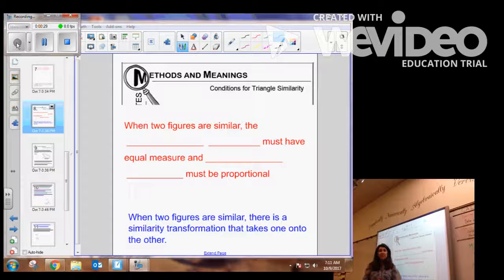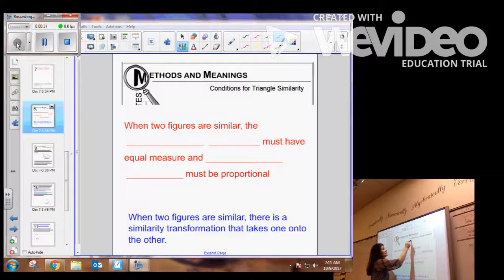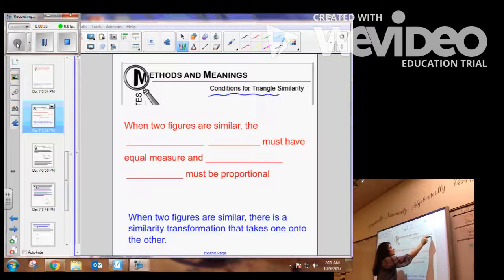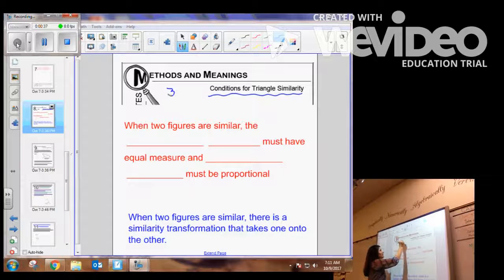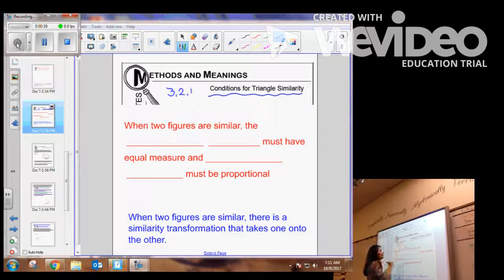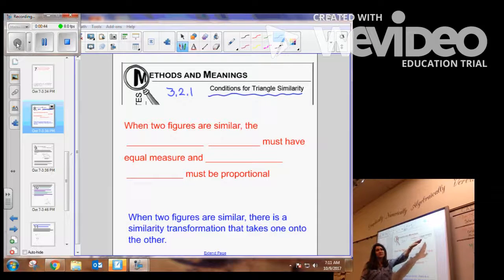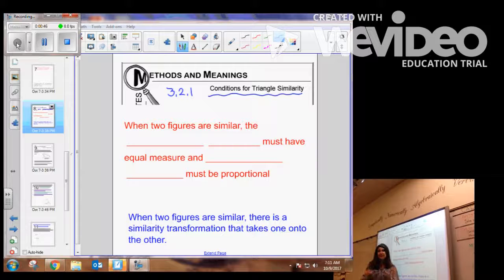So now the new math notes, would you please title it Conditions for Triangle Similarity? And put the lesson number in the margin. It's 3.2.1. Put today's date also. Conditions for Triangle Similarity. So we are going to summarize two of the conditions that you have learned.